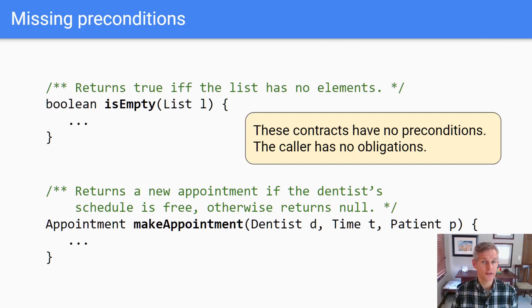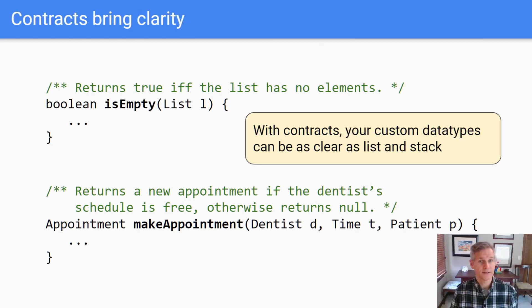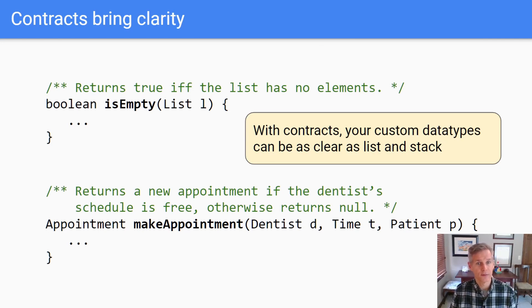For simple contracts, you can skip labeling the precondition and postcondition. Many methods have no preconditions — that means callers have no obligations and should feel free to pass anything into the method, and the implementer will just satisfy the postcondition. Basic data types like lists and stacks have super clean interfaces — callers know exactly how they work, and implementers can build them in different ways without breaking the callers. Contracts can bring that same simplicity and clarity to your custom data types.